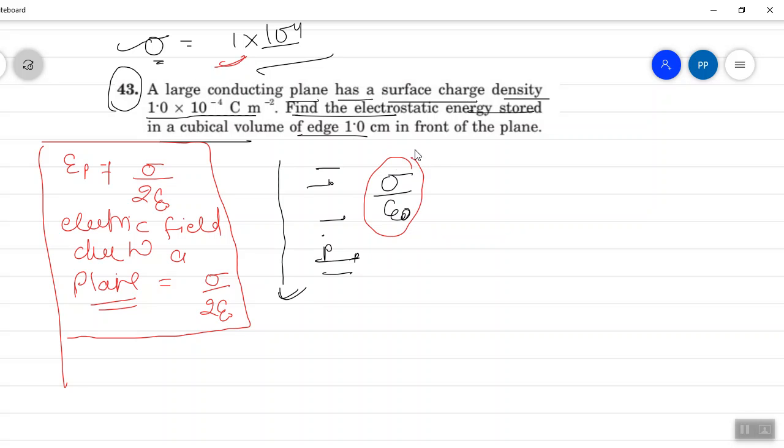Energy density u is equal to half epsilon naught E squared. E is basically electric field.